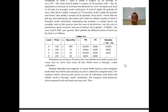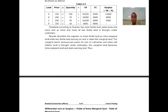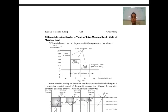As the fertility of land varies, the rent and other factors keep on changing. According to Ricardo, the more fertile land yields more and more rent as more and more less-fertile land is brought under cultivation. Ricardo describes superior or more fertile land as intramarginal land, while less fertile land earning no rent is called marginal land. The marginal land's revenue just covers its cost of cultivation, and when still inferior land is brought under cultivation, the marginal land becomes intramarginal land and starts earning rent.